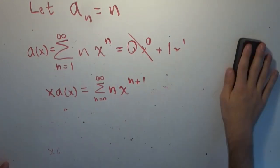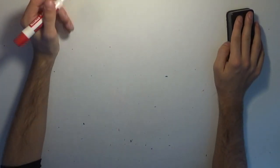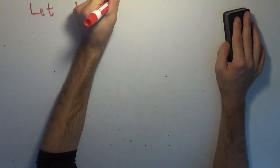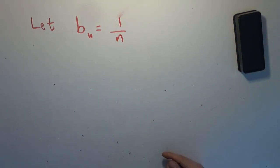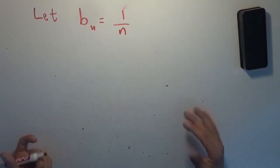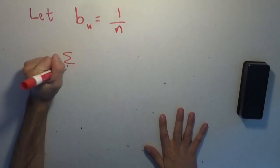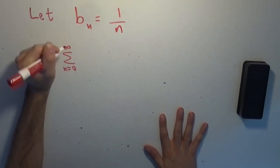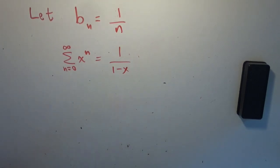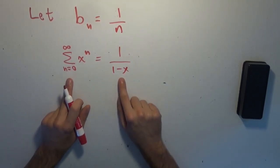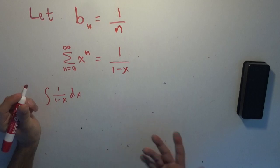Now we define our next sequence: b sub n equals one over n. Instead of integers we're doing reciprocals of integers, so we cannot start at zero — we have to start at one. We base this on the geometric series: the sum from n equals zero to infinity of x to the n equals one over one minus x. We integrate both sides term-wise, and the integral of one over one minus x dx is negative the natural logarithm of one minus x.